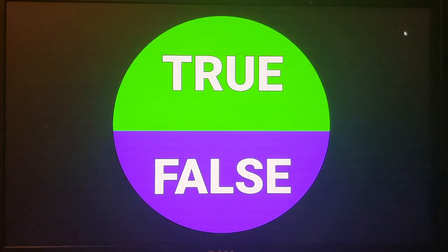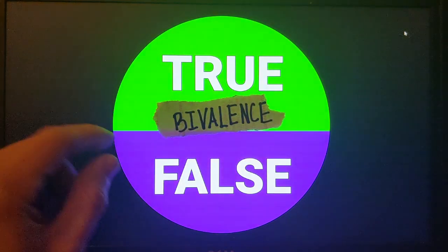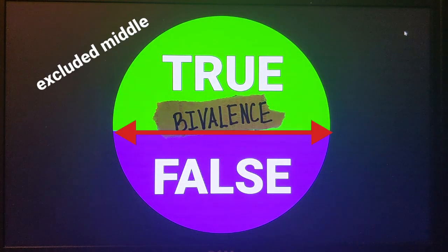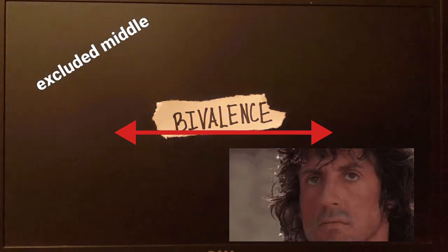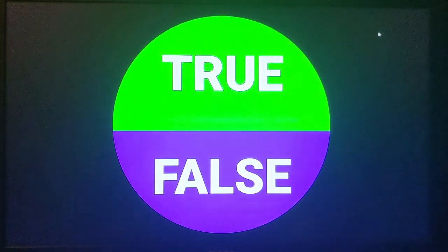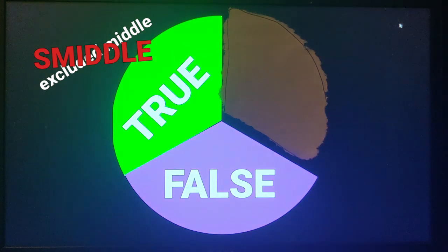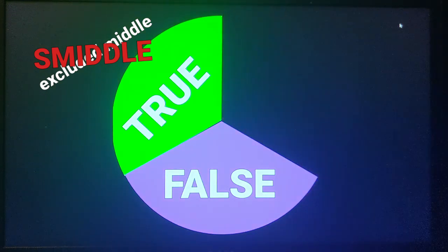The term for something that is only true or false is known as bivalence. Bivalence takes the principle of excluded middle very seriously. What if instead of just saying the sentence is either true or false, we introduce a third option? Middle schmiddle. There's plenty of room in there for truth options.